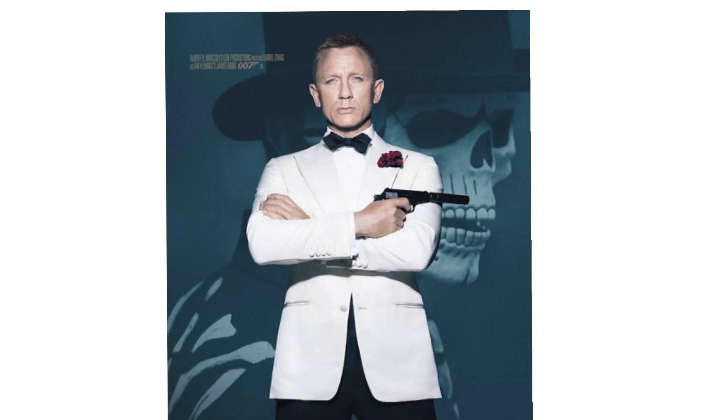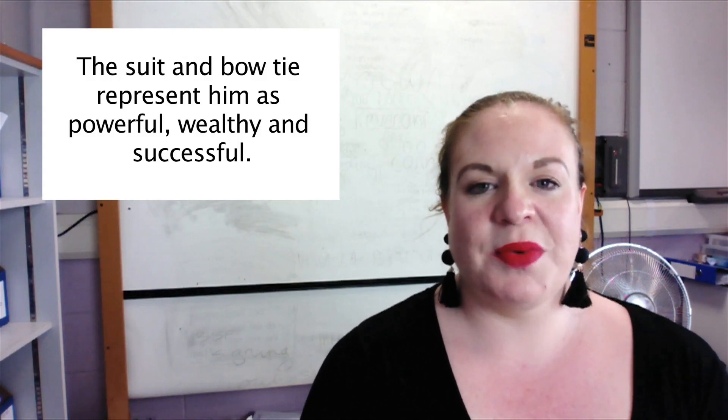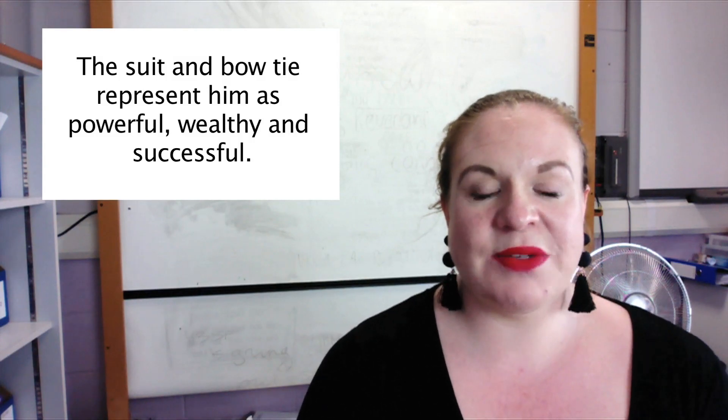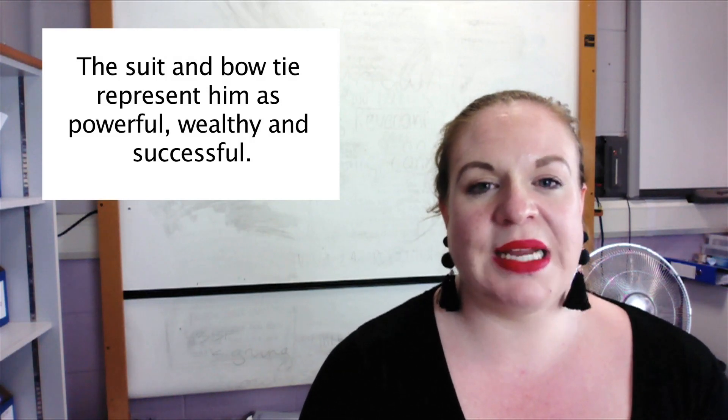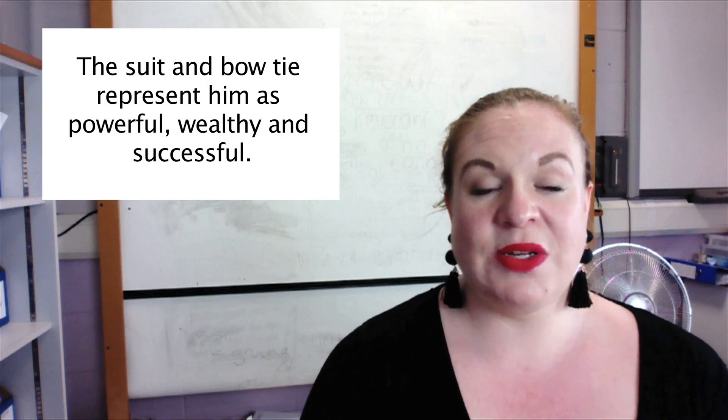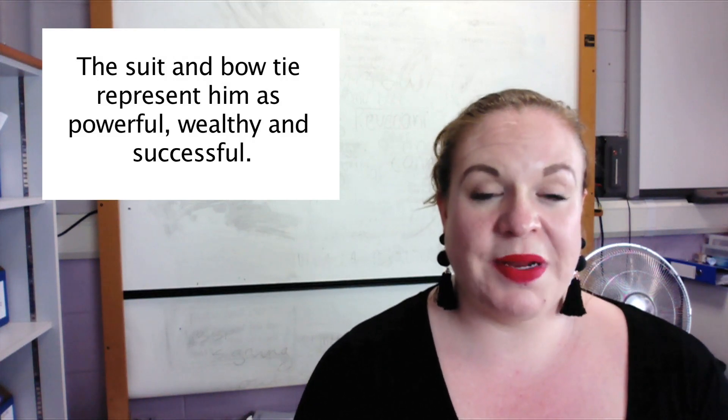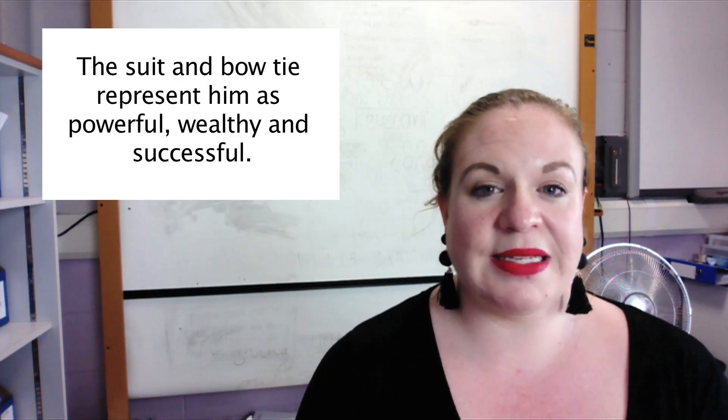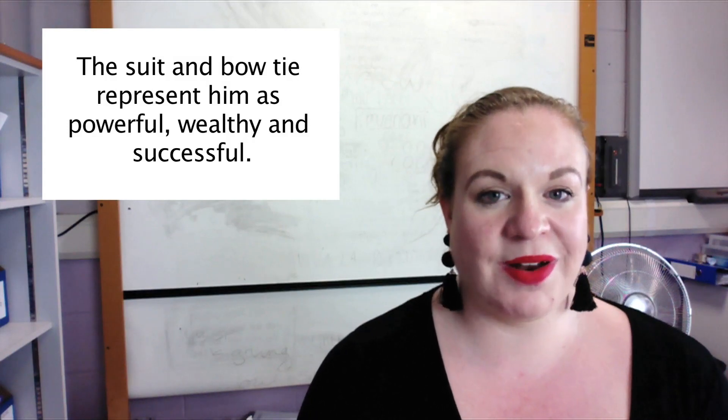Bond's character is seen wearing a white tuxedo with a black bow tie. A suit in general with a bow tie is normally seen as representing or signifying somebody as being quite wealthy, quite middle to upper class and quite powerful and dominant because these kinds of suits are often quite expensive and only ever worn to quite upper class events.